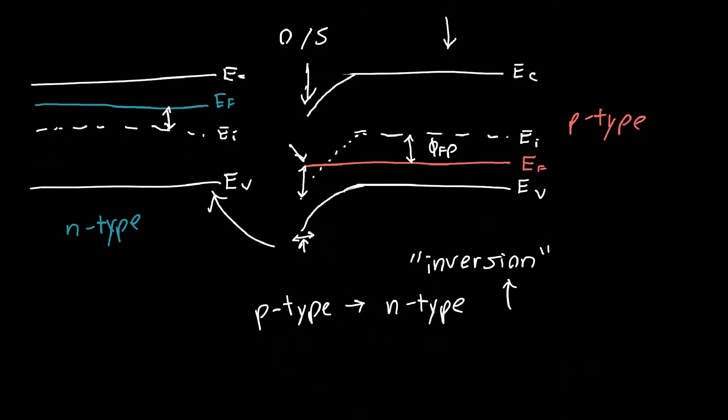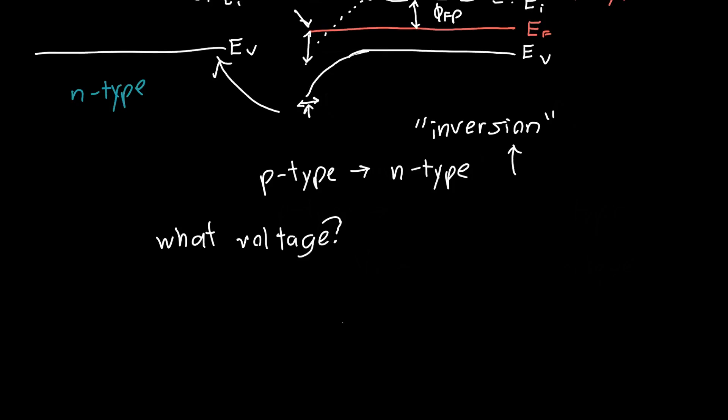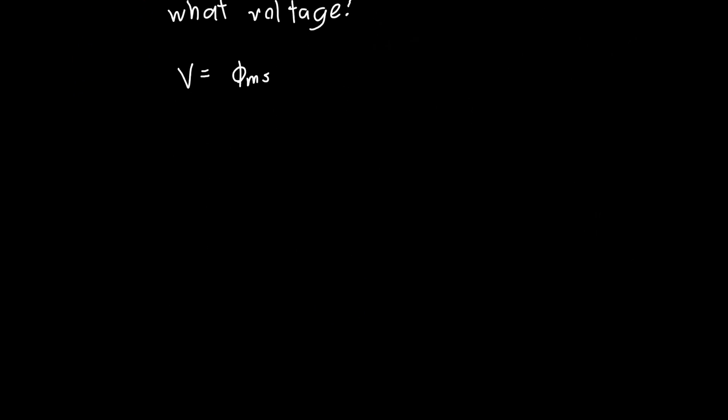And so the next natural question is what voltage do we need to apply to achieve inversion? Well we know that if we apply a voltage equal to phi ms to the gate, and that's probably a negative voltage but maybe not,